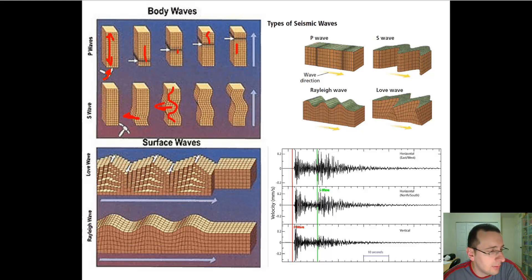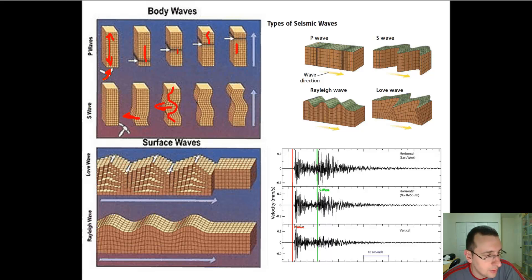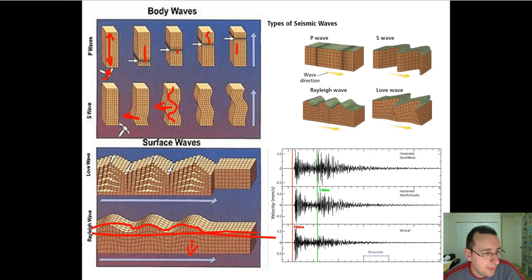Then you have the Love wave and the Rayleigh wave, which are surface waves generated by the P and the S wave as they reach the epicenter at the surface, and they spread from the epicenter towards around the area of the earthquake. The Rayleigh waves look like the major ocean waves that you know of. They affect the top more than they affect the bottom — as you go deep, they become less and less effective.